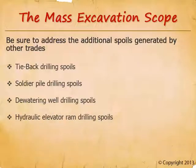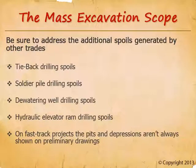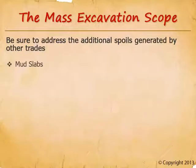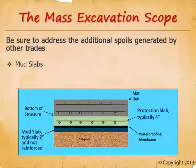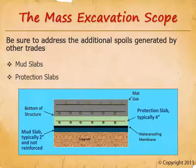Hydraulic elevator ram drilling spoils may be on the architectural and/or vertical transportation drawings, but unless excavation bidders are specifically told otherwise, they're going to assume the elevator subcontractor is off-hauling their own spoils. On fast-track projects, the pits and depressions aren't always shown on preliminary drawings — especially the plumbing pits. Fast-track projects commonly bid the mass excavation trades off very preliminary drawings, so we've got to anticipate those pits and convey their size and locations to the excavation bidders. Mud slabs are used to provide a solid and clean working surface at the base of an excavation, usually about 2 inches thick. These are a means-and-methods of construction, so they won't be on the drawings. Protection slabs are used to provide stable working surfaces over a waterproofing membrane and to protect the membrane — typically about 4 inches thick, and also a means-and-methods item not on the drawings.